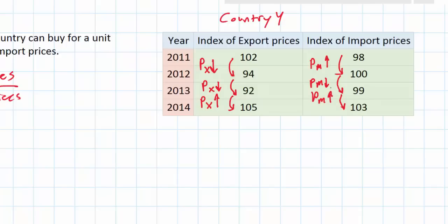The terms of trade can be calculated by dividing the index of export prices for each year by the index of import prices for each year. Let's start by calculating the terms of trade for 2011. To do this we simply take the index of the country's export prices, which is 102, divided by the index of the country's import prices, which is 98, and we multiply that by 100 to convert it to an index.